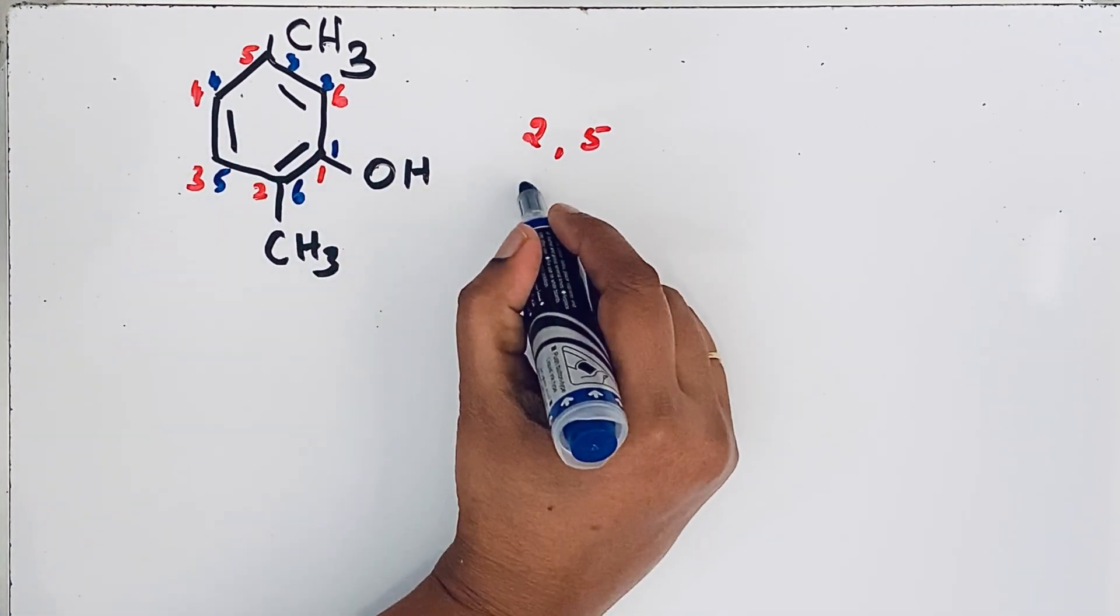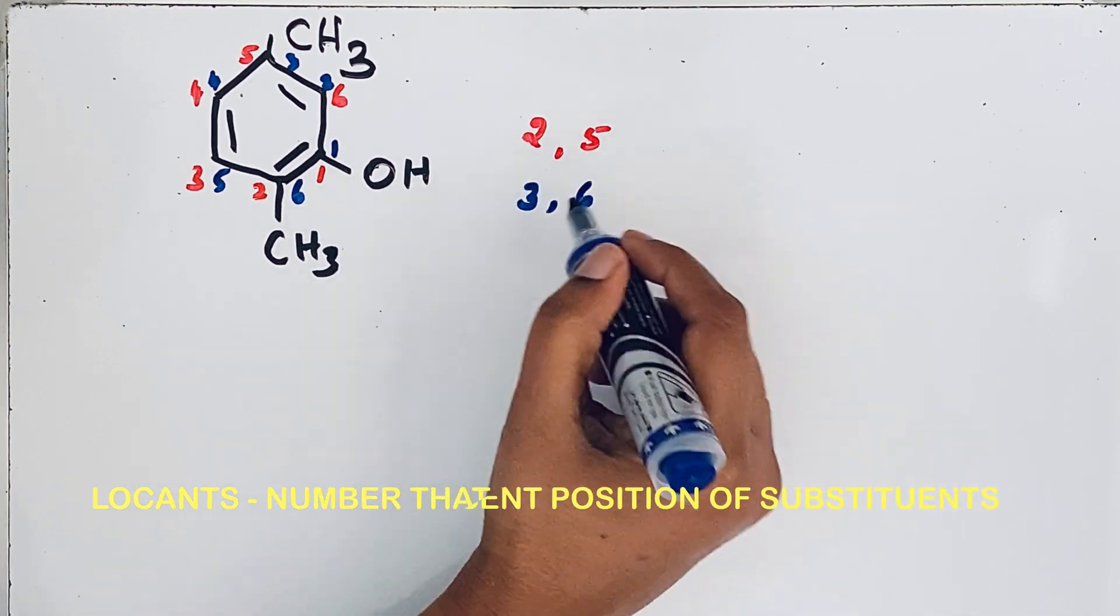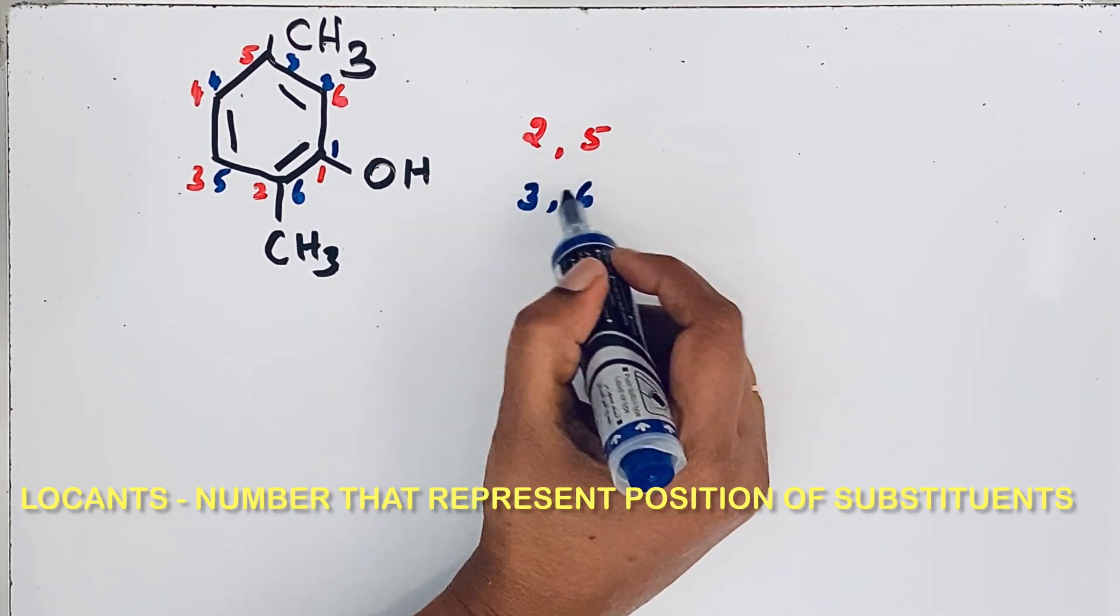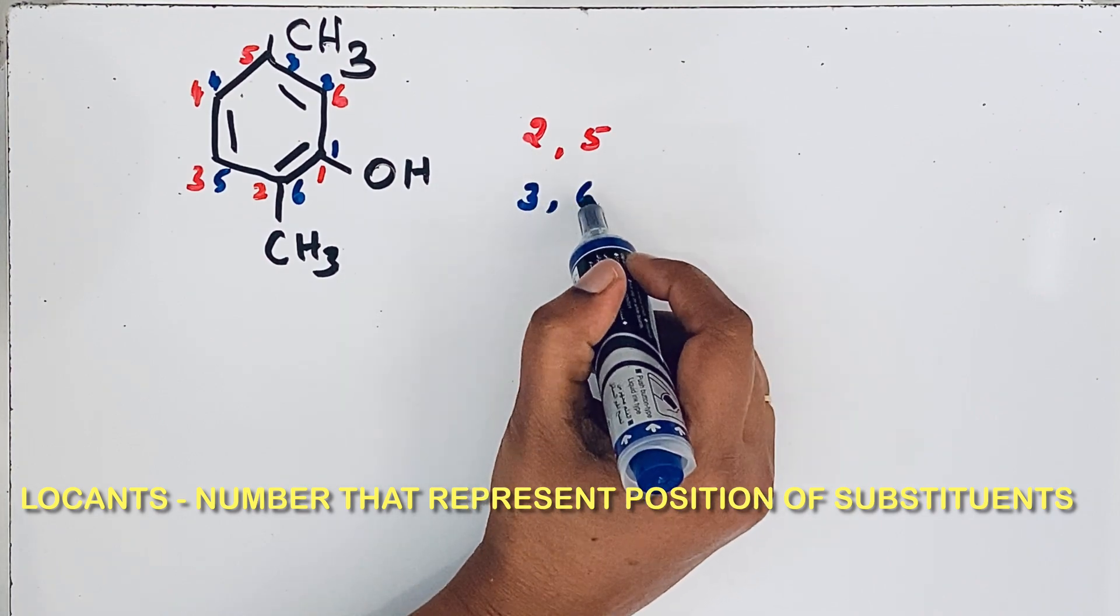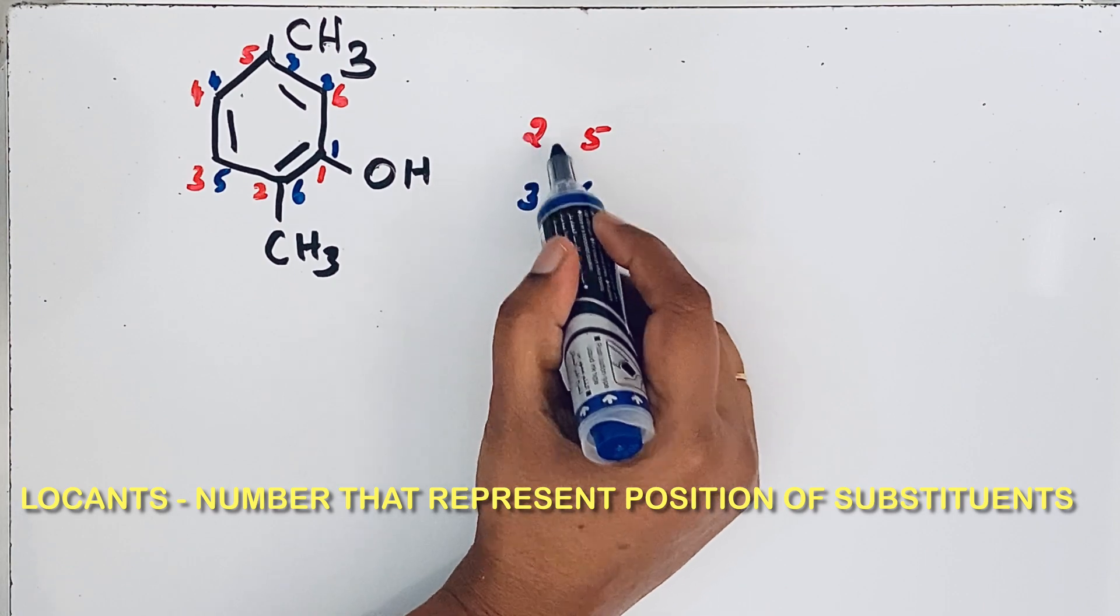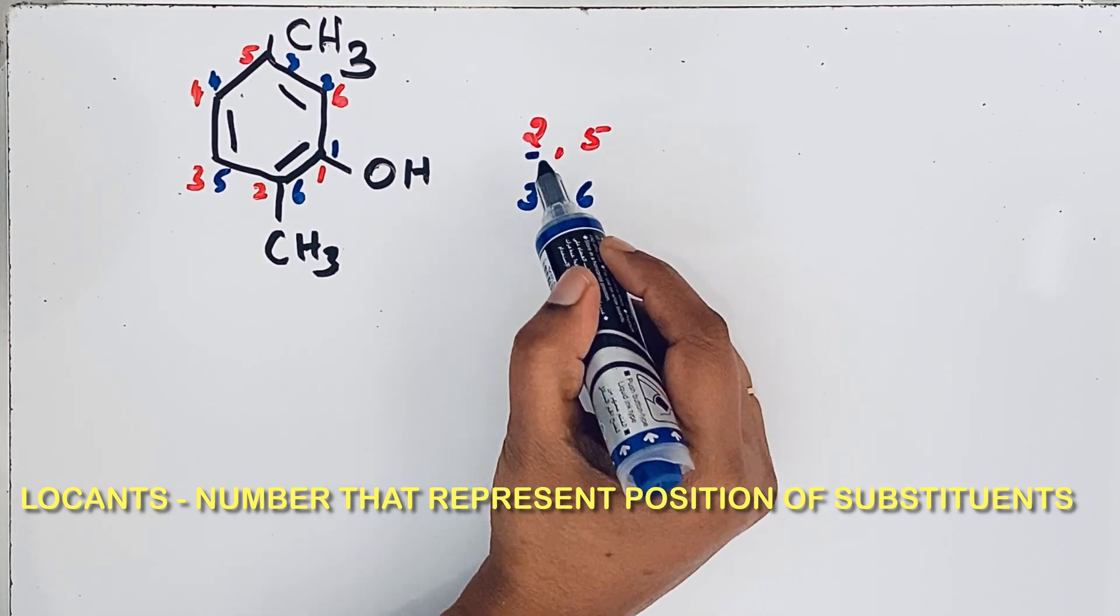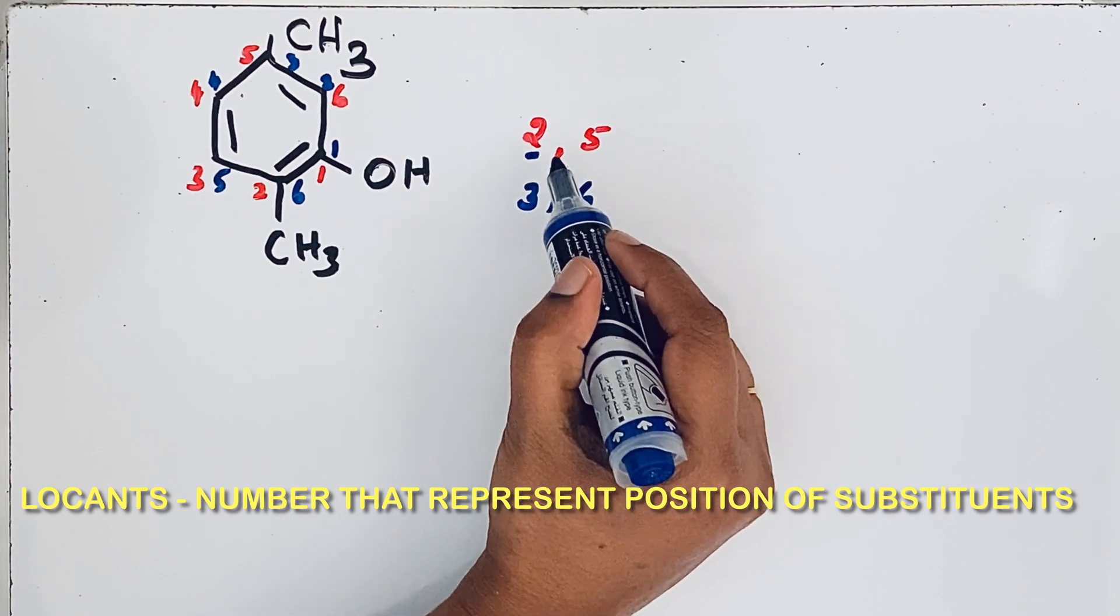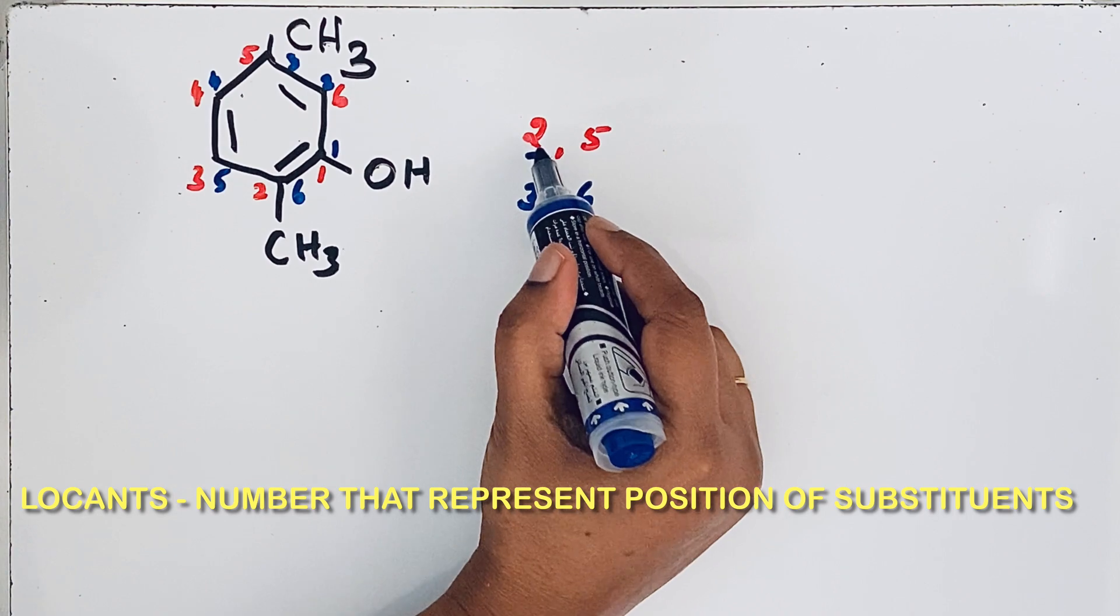Let us write 3, then 6. If you analyze this, this is one set of locants and this is another set of locants. That means, locant means numbers. But if you look at this, the first set, this one should get the lowest number. According to that lowest locant rule or first point difference rule, the lowest locant should get that priority.